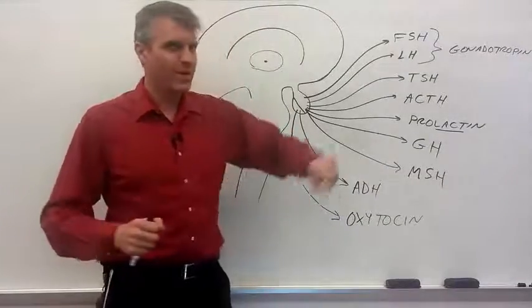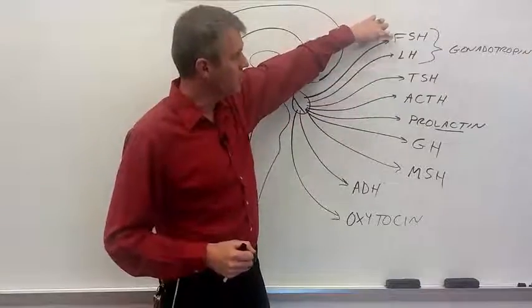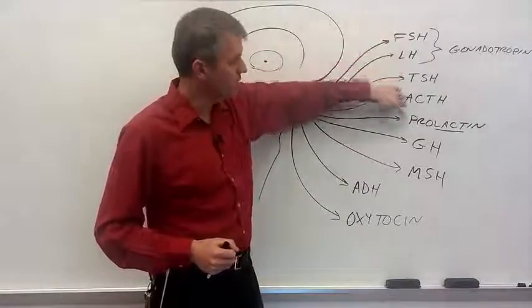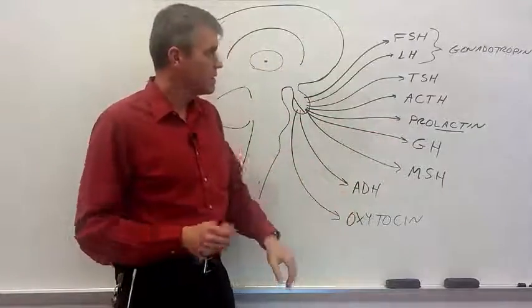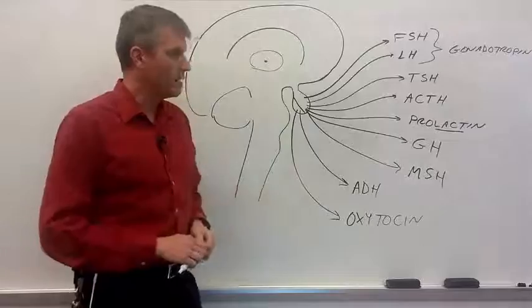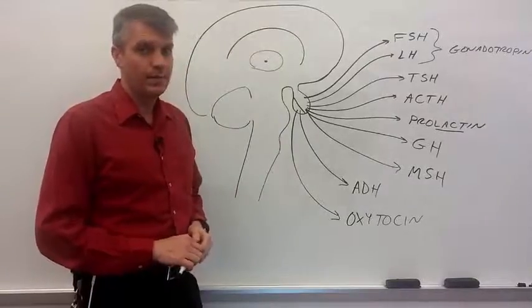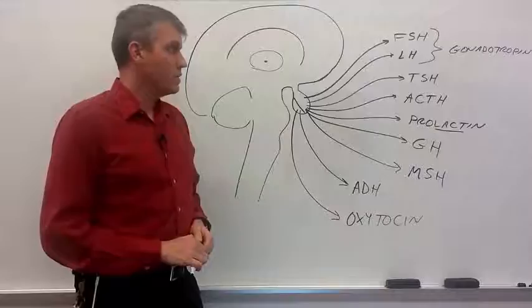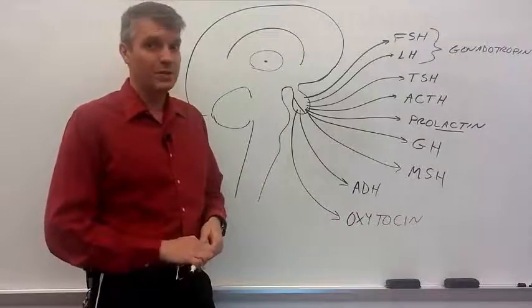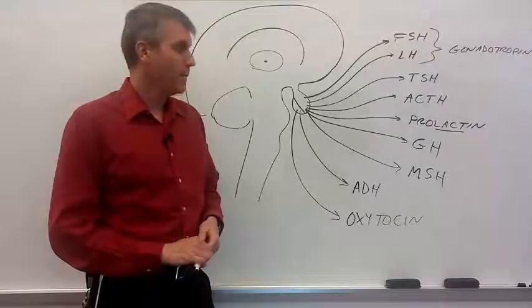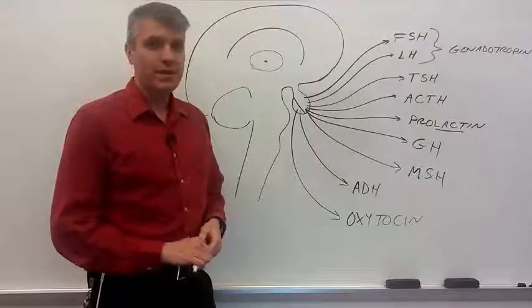Let me count these and make sure I've got all of them. From the anterior, we should have seven. One, two, three, four, five, six, seven. And then from the posterior, two. So I've covered all of the endocrine glands from the pituitary gland. If you have any questions, please feel free to leave them in the comments down below or comments or critiques, feel free. Otherwise, thank you for watching.